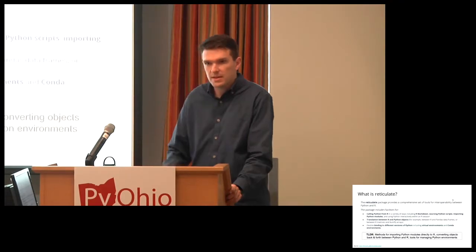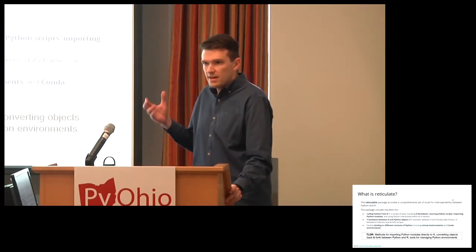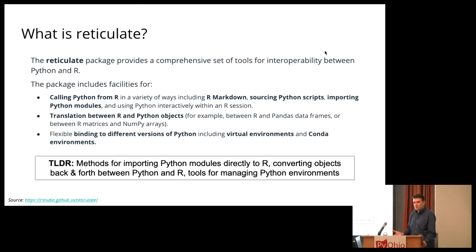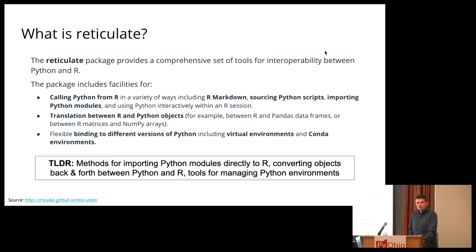Let's unpack what Reticulate actually is. Here's some text taken from the Reticulate RStudio website — RStudio is a popular development environment for the R language. The TLDR is this: Reticulate is an R package that more or less opens a portal for you to access Python modules, convert objects from Python variables to R variables and vice versa, and manage Python environments from within Reticulate itself.